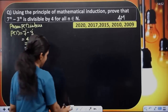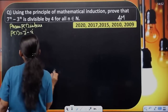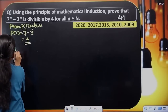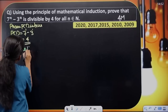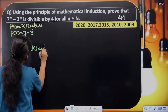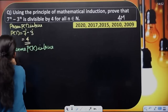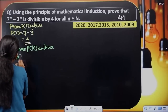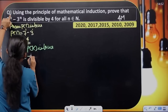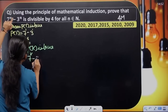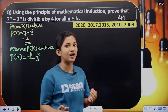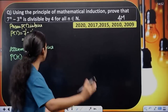In the second step, assume P of k is true. Assume P of k is true. P of k equals 7 raised to k minus 3 raised to k, which is divisible by 4. Divisible by 4 is assumed true.